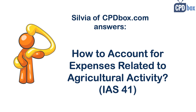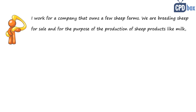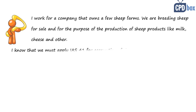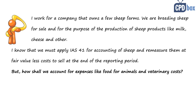Today's question comes from a viewer from Australia: 'I work for a company that owns a few sheep farms. We are breeding sheep for sale and for the production of sheep products like milk, cheese, and others. I know that we must apply IAS 41 Agriculture for accounting of sheep and remeasure them at fair value less cost to sell at the end of the reporting period, but how shall we account for expenses like food for animals and veterinary costs?'